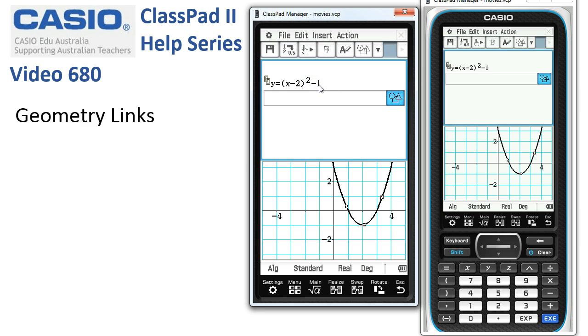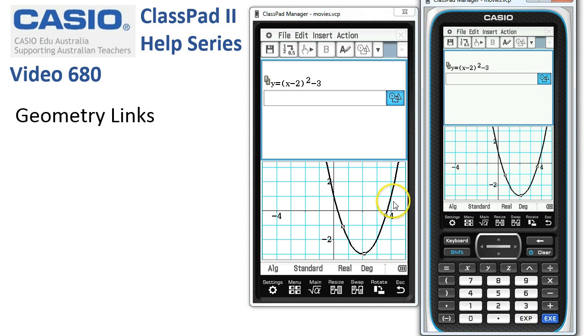Alternatively, I can modify the coefficients up here. So I'm going to change that to a three and tap execute. And then it works the other way around. Changes to the function here are reflected in the graph below.